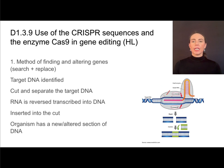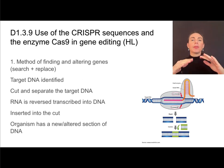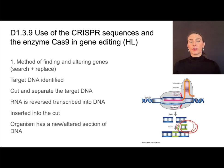The target DNA with the faulty gene is identified using a segment of RNA that is complementary to that gene. Once the target DNA has been identified, it is cut or cleaved. Then we need to make some DNA — embedded within the CRISPR and Cas9 complex is some RNA, and that RNA can be transcribed into DNA. That desirable version of the gene is then inserted into the DNA, and now that organism has a new or altered section of their DNA.